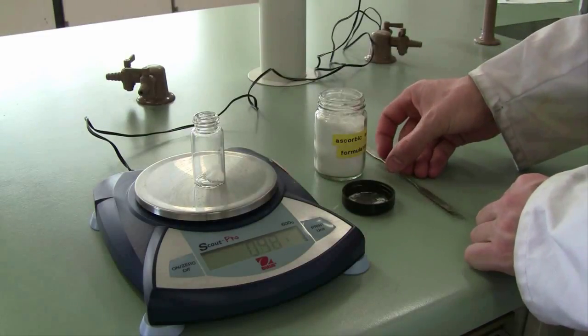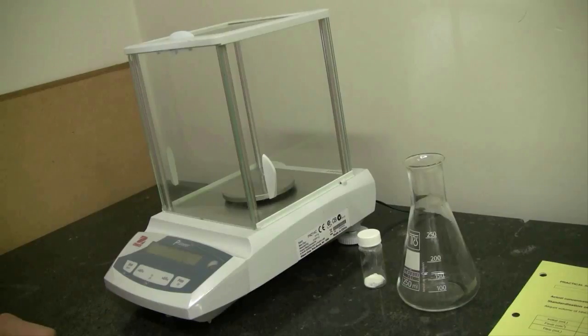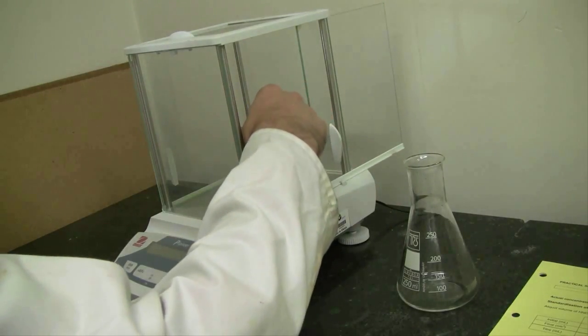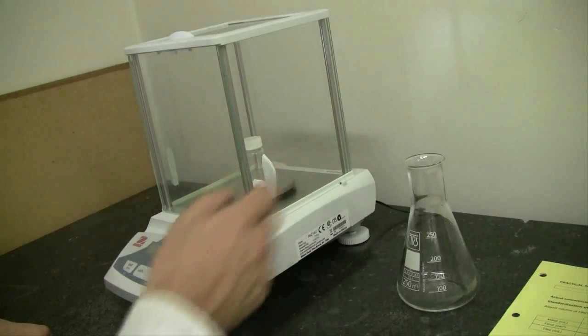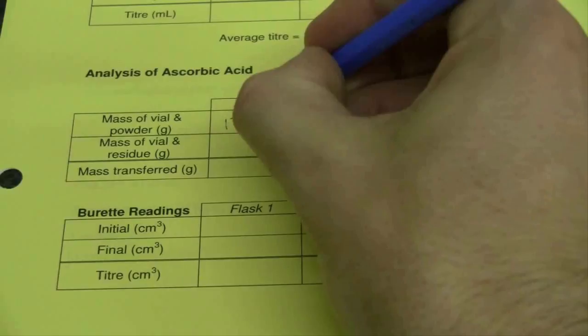Then come into the analytical balance room, and here is where we will determine the true mass of ascorbic acid that you are using for analysis. Zero an analytical balance with the doors shut, and then place your sample vial plus your sample in the balance. Record your mass to four decimal places and note that directly down in your result sheet.